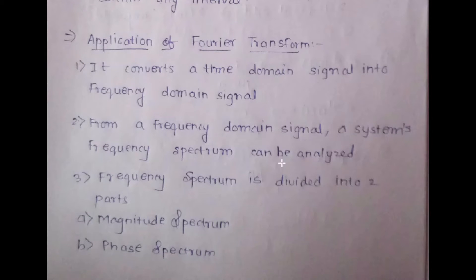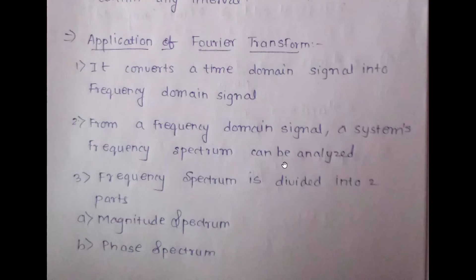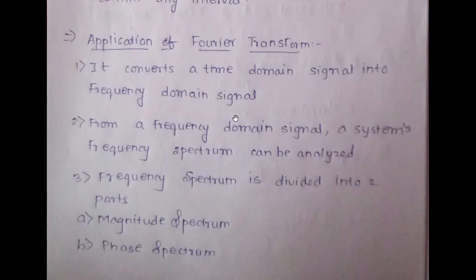The application of Fourier transform is that it converts a time domain signal — or a discrete signal in the case of DTFT — into a frequency domain signal. The significance of a frequency domain signal is that the system's frequency spectrum can be analyzed. The frequency spectrum can further be divided into two parts: the magnitude spectrum and the phase spectrum.